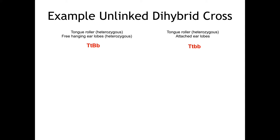The parent on the right hand side is going to be a tongue roller — again heterozygous, uppercase T, lowercase T. And they will have attached earlobes, meaning they must be homozygous recessive: lowercase B, lowercase B.